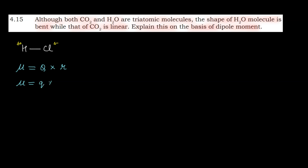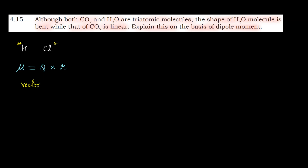Dipole moment is a vector quantity, जिसका formula होता है: mu (μ) is equals to charge (Q) into distance of separation (R). You may also see it written as μ = q × d, where small q is for charge and d is for the distance of separation. The direction is from the less electronegative atom to the more electronegative atom — we draw an arrow, and place a cross at the less electronegative end to denote dipole moment.